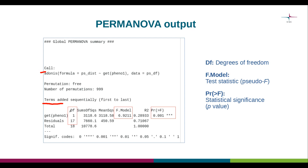The column 'Df' corresponds to degrees of freedom and provides information about the sample size used to perform the analysis. When reporting the results of tests like this, it is customary to list the degrees of freedom for both the variable being tested and the residual degrees of freedom, which here are 1 and 17 respectively.